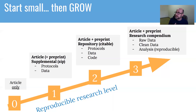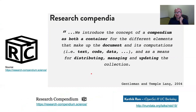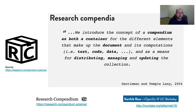The research companion concept comes from a very nice definition by Gentleman and Poland in 2004. A companion is a container for the different elements that make up the document — a combination of text, code, and data organized in a way that you can distribute, manage with updates, and make available permanently.